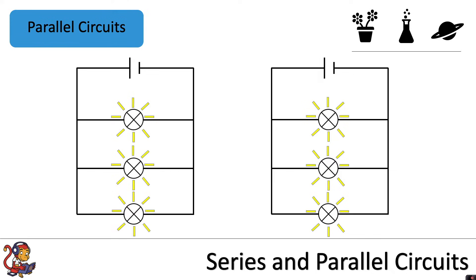Similarly, if the lamp in the second branch broke, the first and third branches would still work, and if the lamp in the third branch broke, the lamps in the first and second branches would still work. So these circuits are much more common because they're much more useful in comparison to the series circuit.